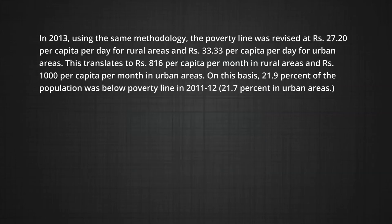In 2013, using the same methodology, the poverty line was revised at rupees 27.20 per capita per day for rural areas and rupees 33.33 per capita per day for urban areas. This translates to rupees 816 per capita per month in rural areas and rupees 1000 per capita per month in urban areas.